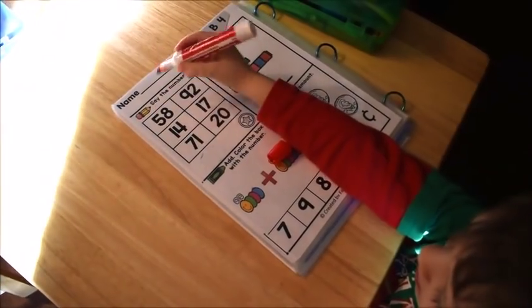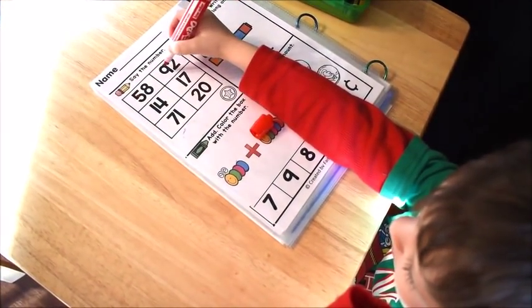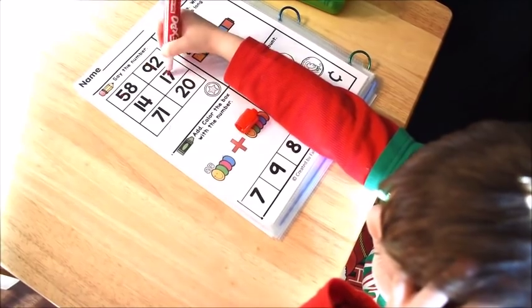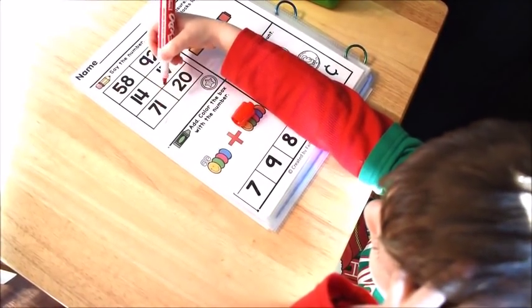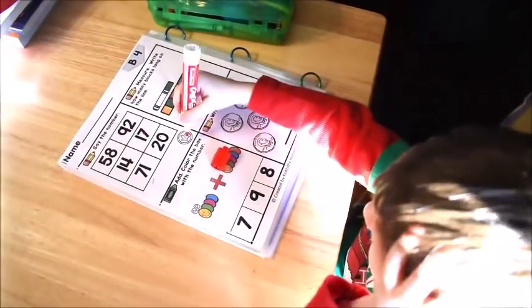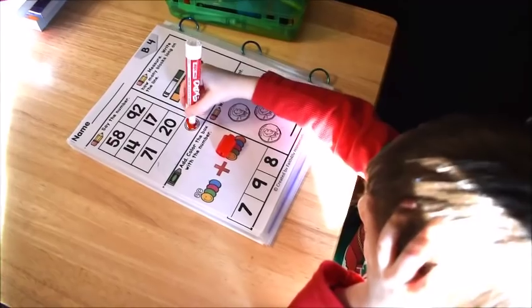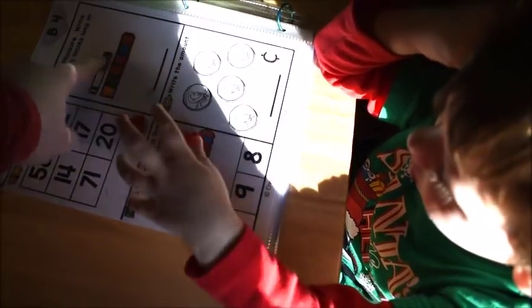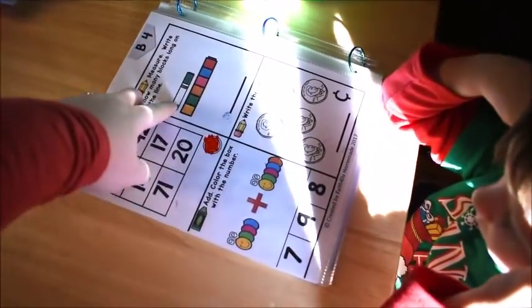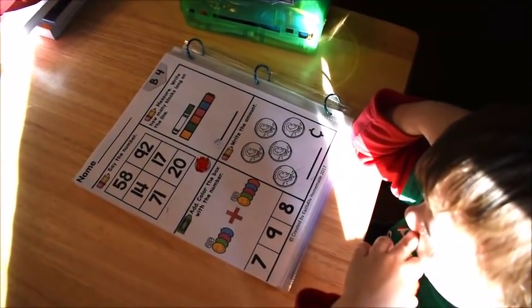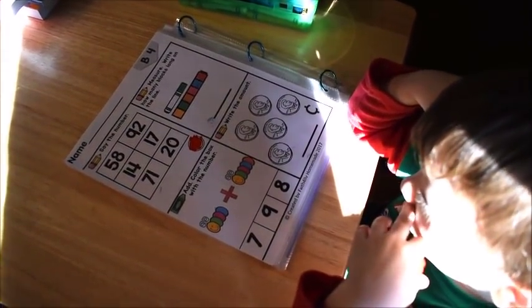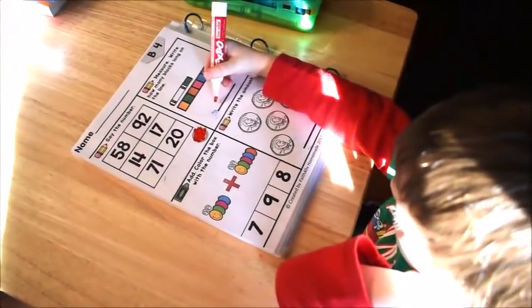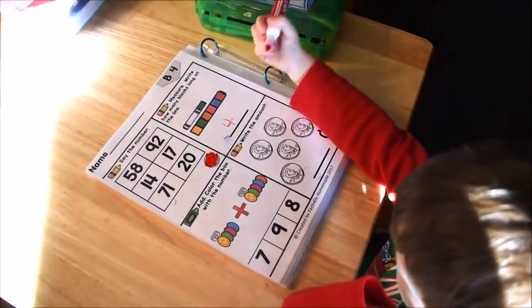All right, you're going to say the name of each number. What number is that? 58. Good. 92. Good. 14. Good. 17. Good. 71. Good. 20. Excellent. Now you get to color in the star. Okay. Now the next one says, how long is that? It says measure. And then we're going to write how many blocks long this marker is. Can you count them and see how many blocks? Okay. So write the number on the line here. One, two, three, four long. Remember you go down, over, down some more. That is how you make a four. Good.